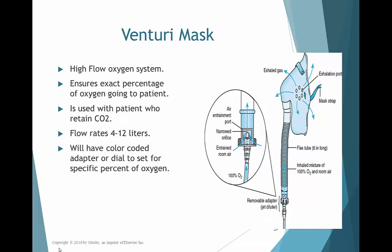The venturi mask is a high flow oxygen system that provides specific control over the percentage of oxygen the patient receives. It has exhalation ports and flexible tubing, with a dial or colored adapter that sets the exact oxygen percentage — 40%, 32%, etc. — independent of the flow rate. This is often helpful in patients who retain CO2, as we can set a more specific oxygen percentage and maintain tighter control to help prevent depression of their hypoxic drive.